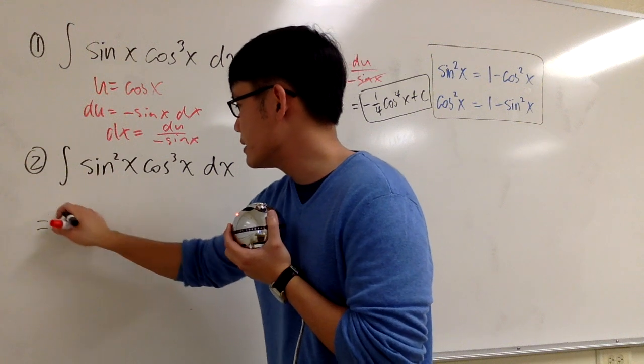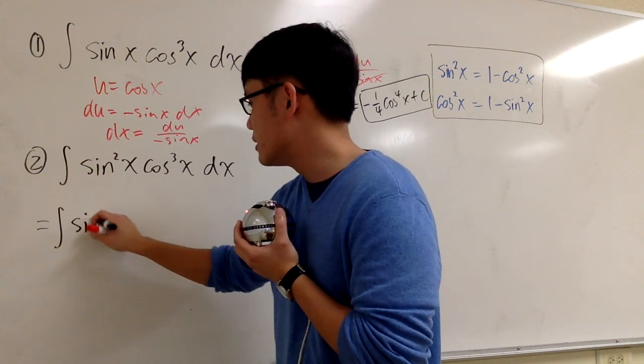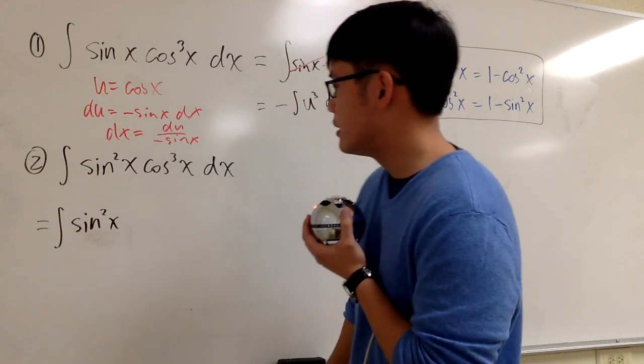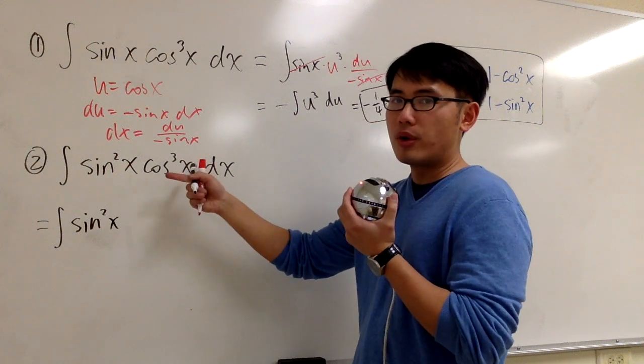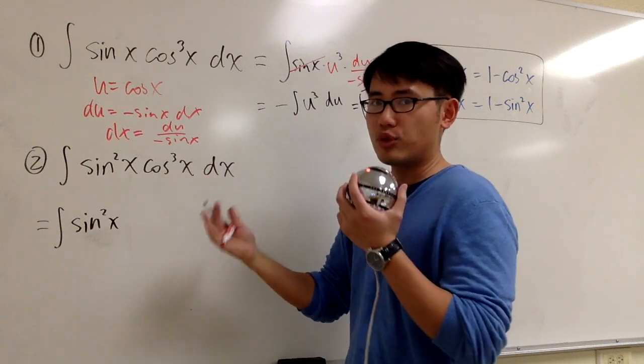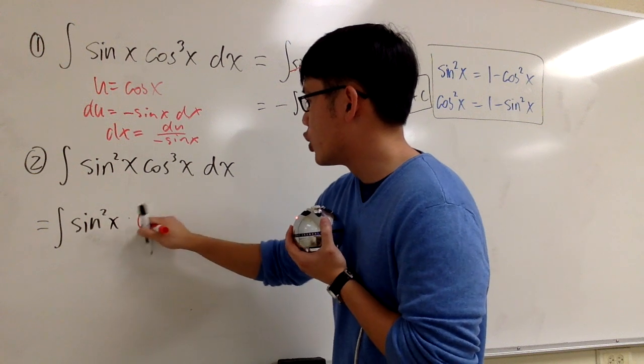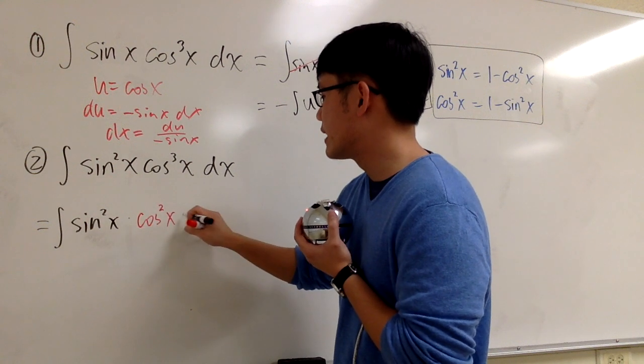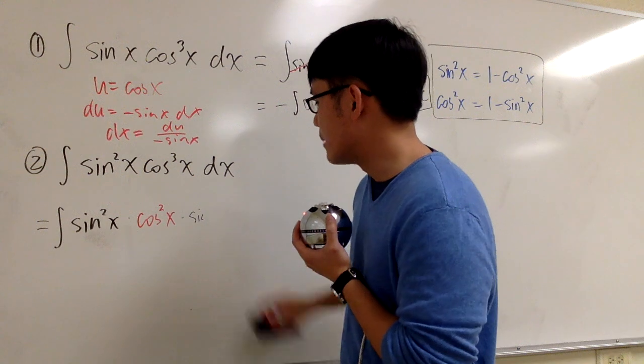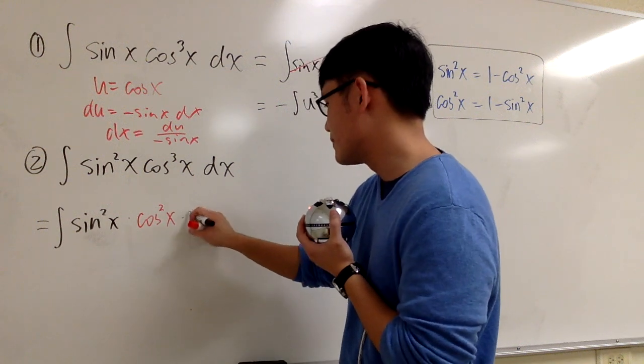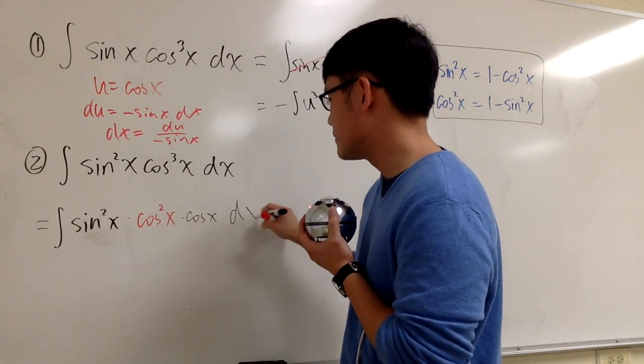This is going to be the same as integral. I will keep this sine squared x. And when you have an odd power, what you should try, I'm just saying trying, take the one out, and then you can look at this as cosine squared x times cosine x dx. Right?